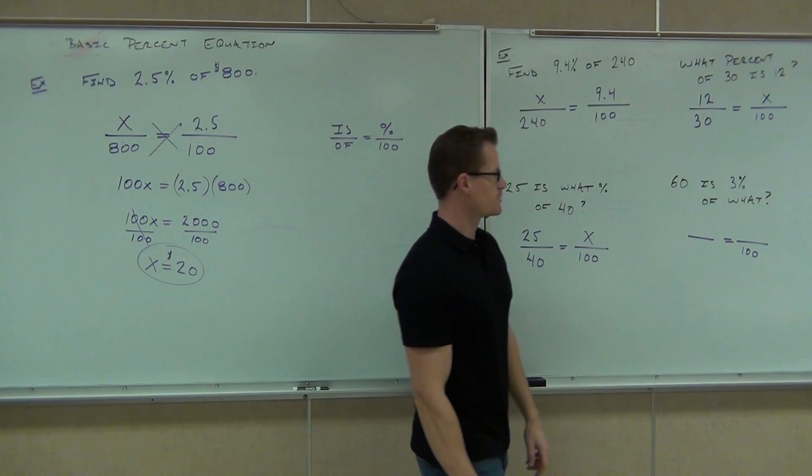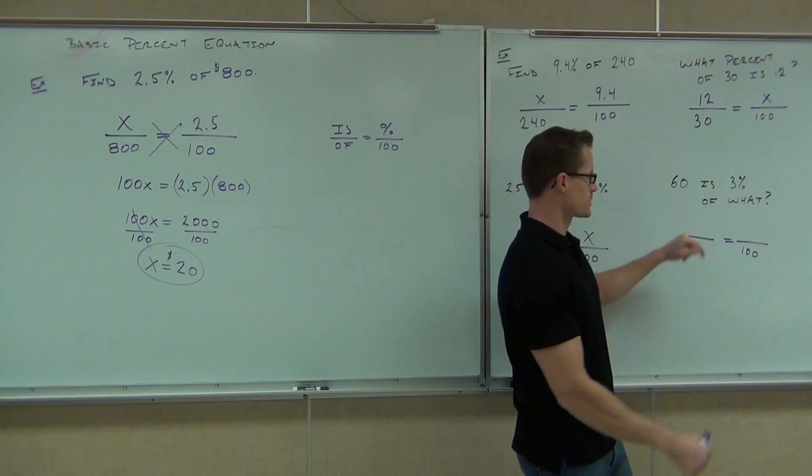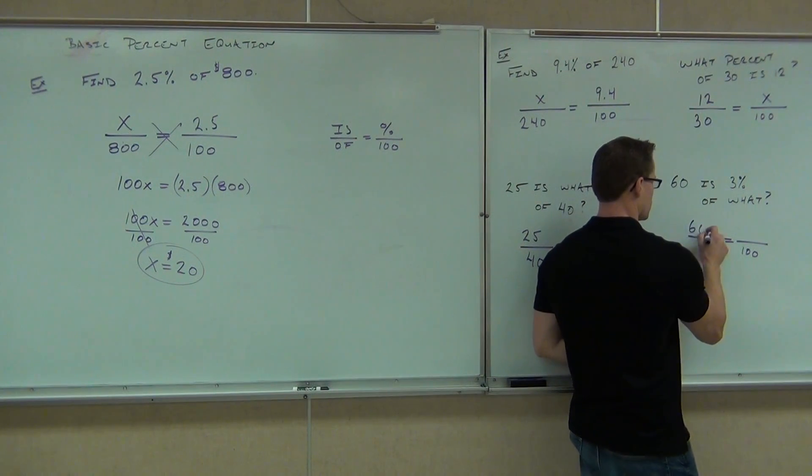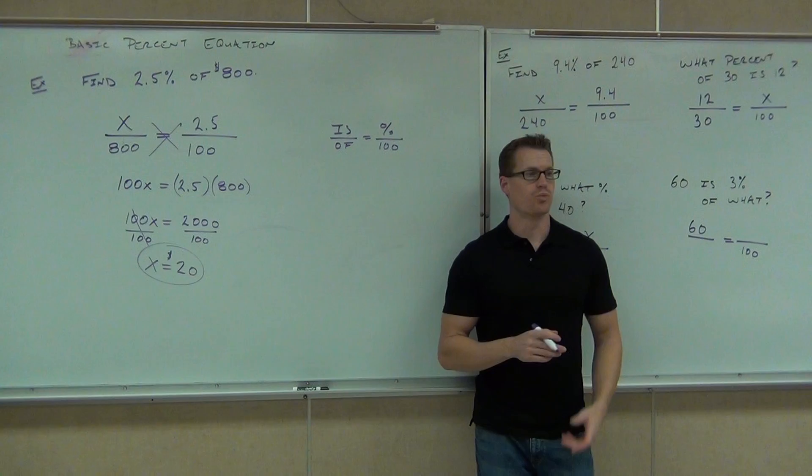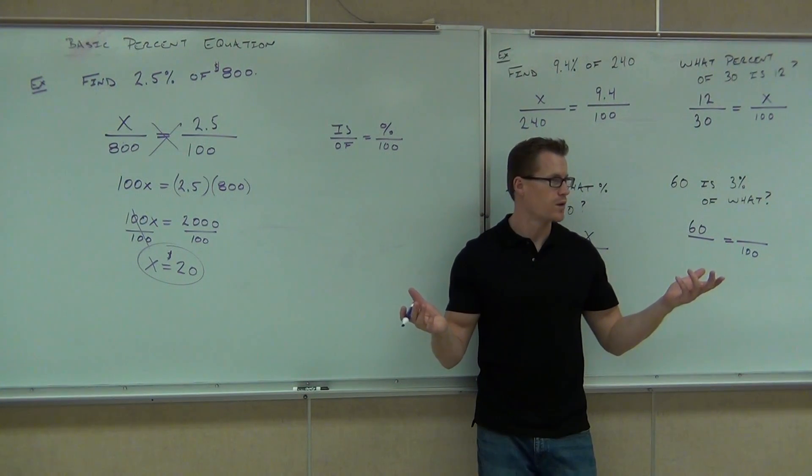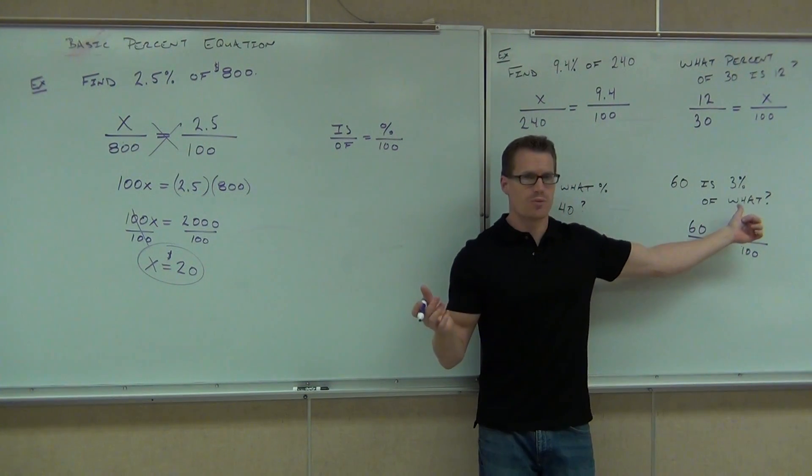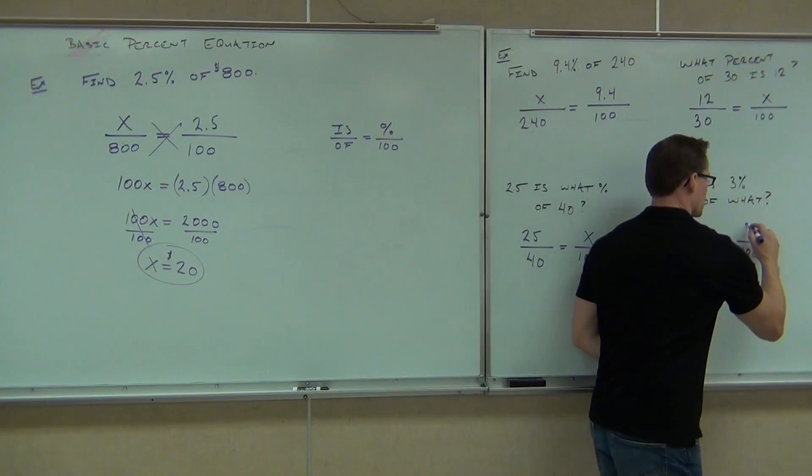How about here? Do we have an 'is'? 60 or is? Do we have an 'of'? It says of what? It doesn't know what the 'of' is. Now our percent, that's one of the obvious ones. We've got to have a 3 right here.